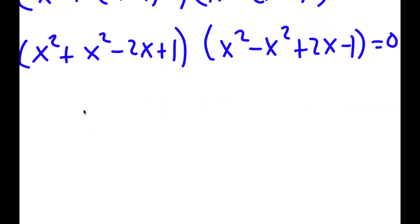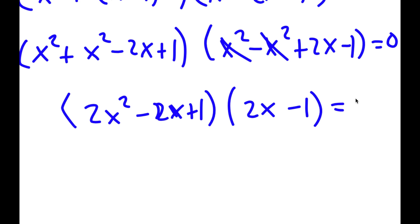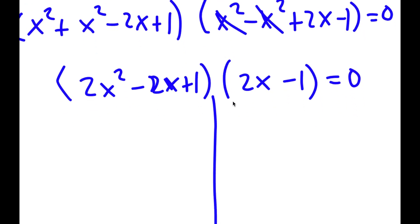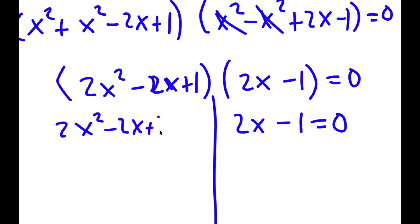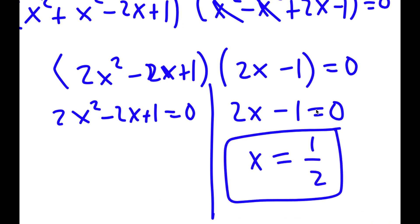Simplifying: x squared plus x squared is 2x squared, so the first factor is 2x squared minus 2x plus 1. In the second factor, x squared terms cancel, leaving 2x minus 1. So the equation is 2x squared minus 2x plus 1 times 2x minus 1 equals 0, giving two equations. For 2x minus 1 equals 0, x simply equals 1 half.